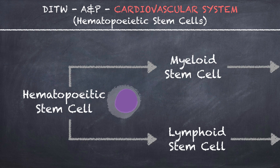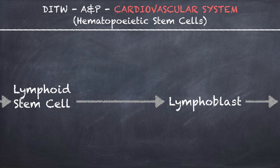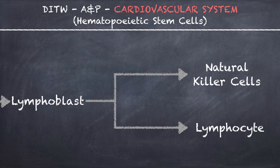Now let's go back to the beginning of this chart and go down the lymphoid stem cell path. This path is a lot simpler. As soon as it becomes a lymphoid stem cell, it will differentiate down only one path to the lymphoblast. From there, it will differentiate down two paths, either creating natural killer cells or a lymphocyte, which is the last white blood cell.